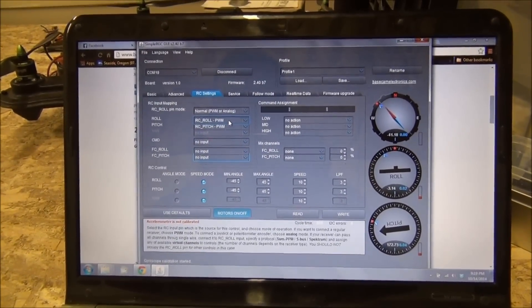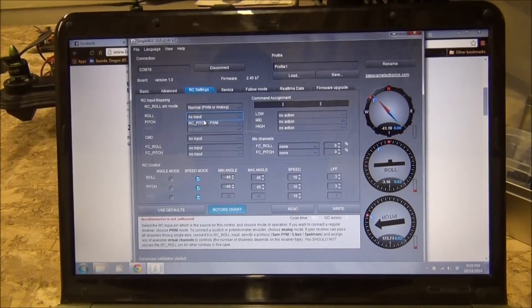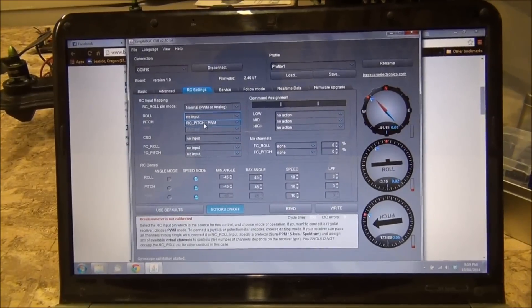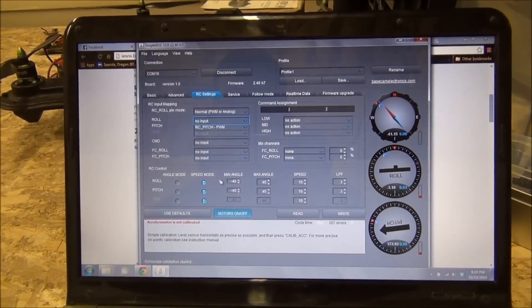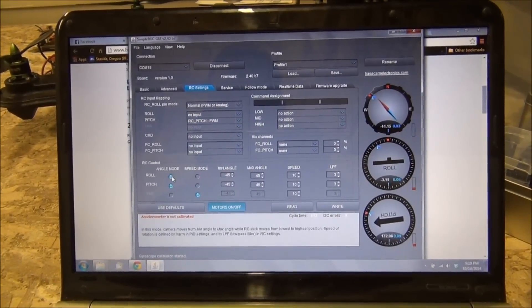I'm not using roll control on my transmitter. The only thing I want to be able to control is the pitch. So I'm going to leave this selected to RC pitch. And then I'm going to change my angles down here. I'm going to change my roll and pitch to angle mode.